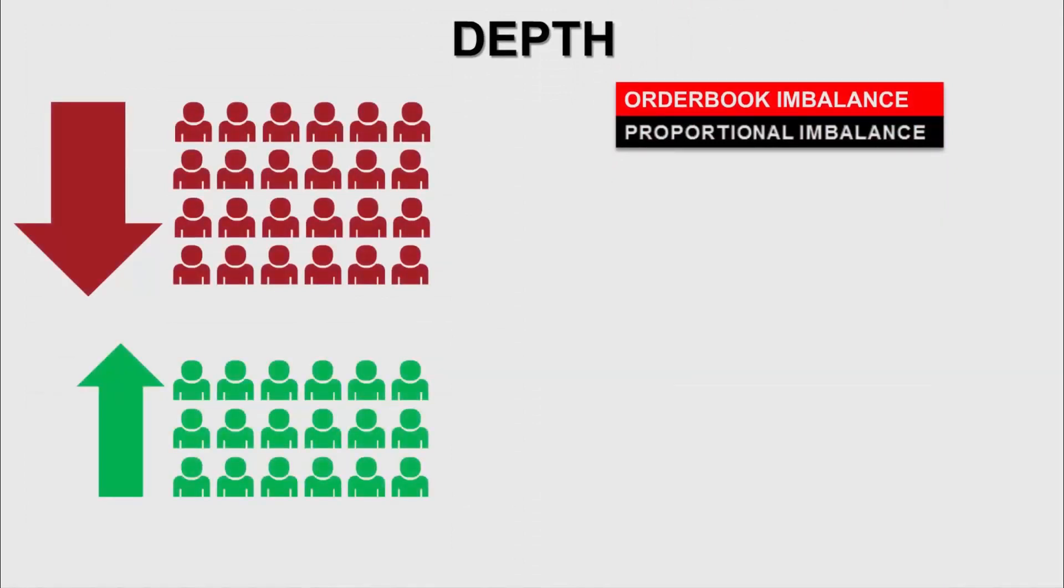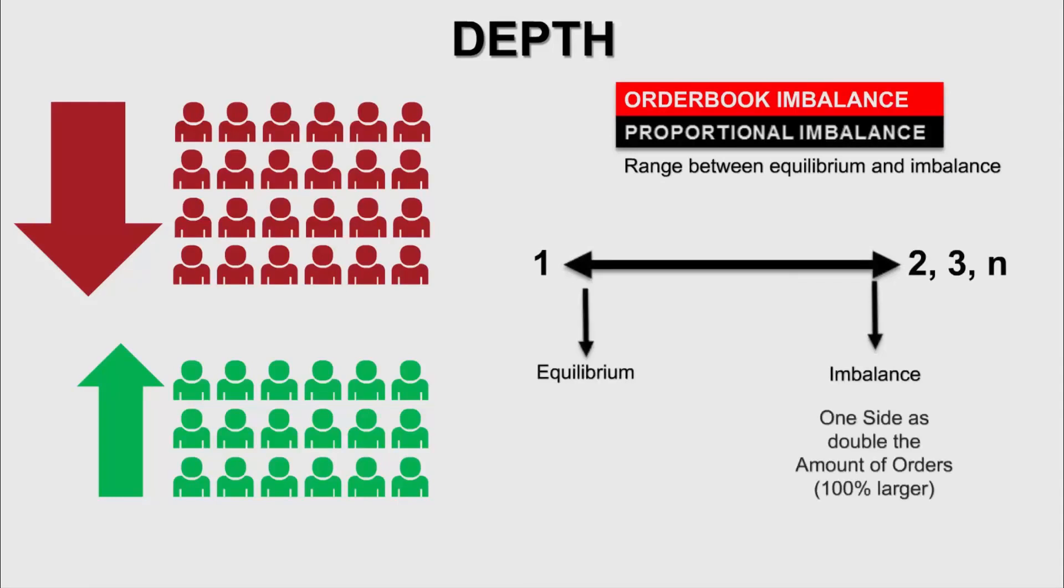We have two ways of displaying order book imbalance. The first we'll talk about is proportional imbalance. This answers the question: what is the proportion of one side in relation to the other side? This will show you the proportion to which one side is proportional to the other.